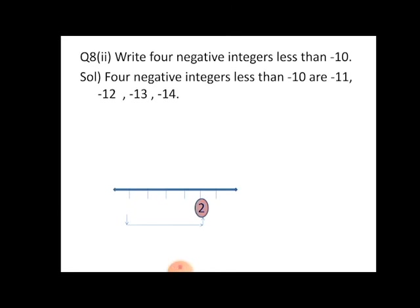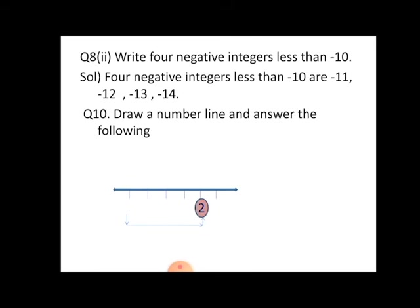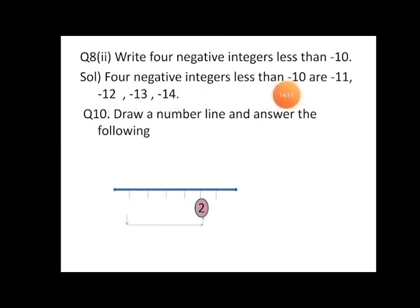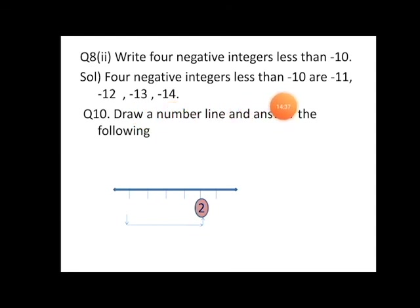Next part of question number eight: write four negative integers less than minus ten. Smaller negative integers are those farther from zero. So as compared to minus ten, the four negative integers less than minus ten are: minus eleven, minus twelve, minus thirteen, and minus fourteen.